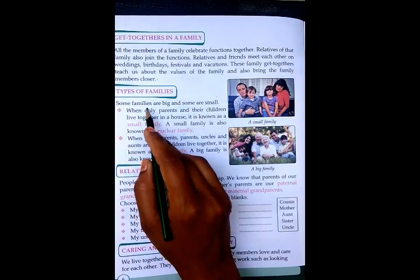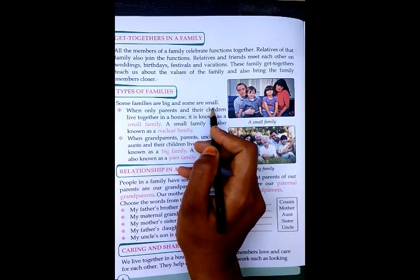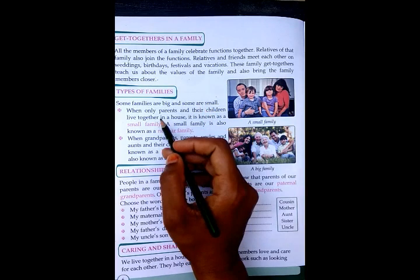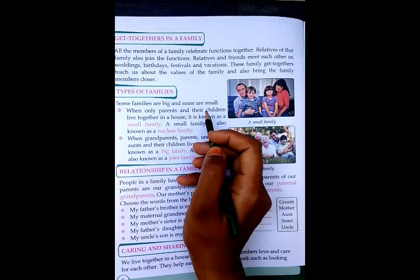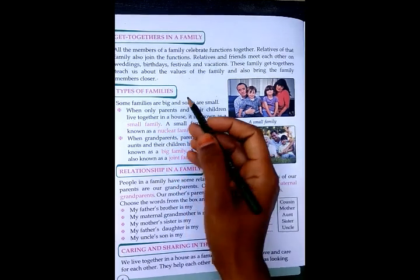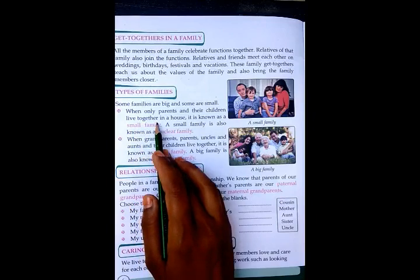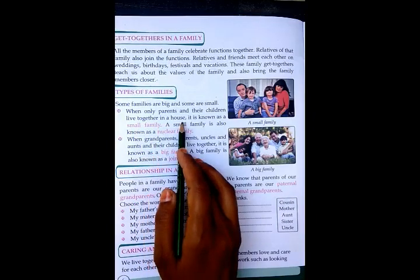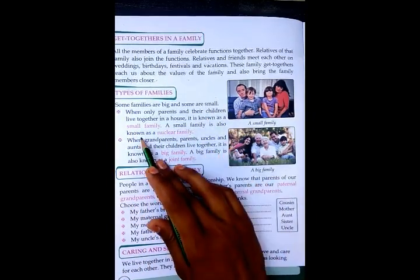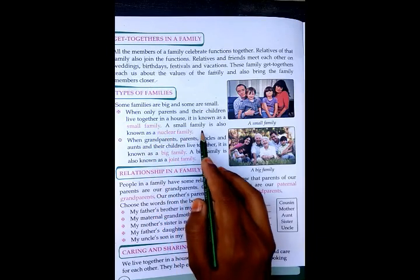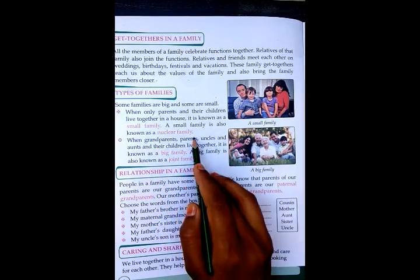Some families are big and some are small. When only parents and their children live together in a house, it is known as a small family. A small family is also known as a nuclear family.